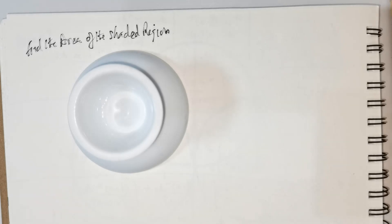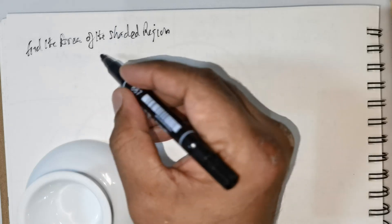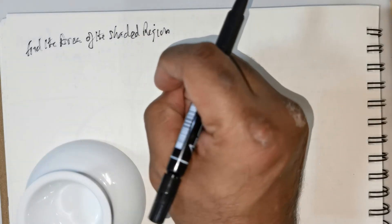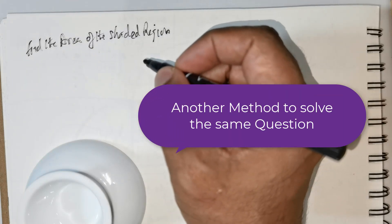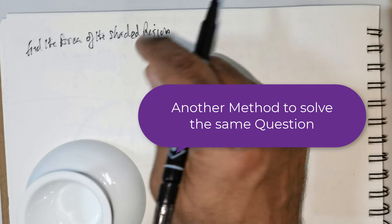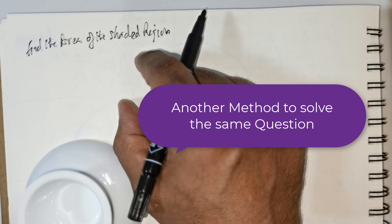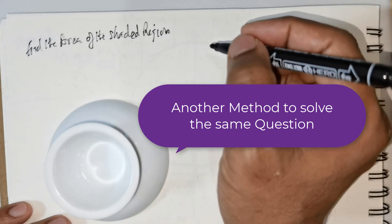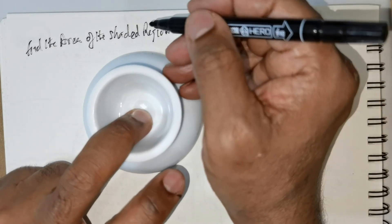Good day everybody. We are expected to find the area of the shaded region. Now before I start, let me mention this: the solution to this question has already been presented by another content provider, but what I am going to do here is another alternate method. You can view this method and also the other method and compare them — whichever appeals to your mind, you can take that method. So having mentioned that, this is another way to find the area of the shaded region.